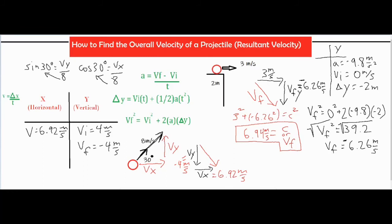We work this out similarly to the first problem. We replace the 3 with the 4, and the negative 6.26 with 6.92 — square them, add them up, square root both sides, and find the final velocity, which comes out to 7.99 meters per second.